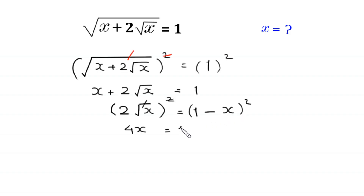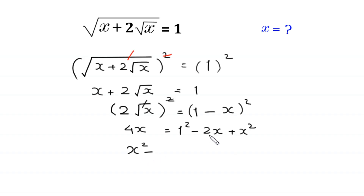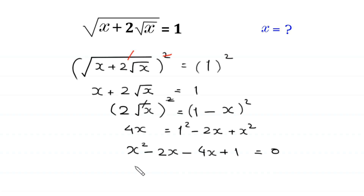Expanding (1 minus x)² gives 1 minus 2x plus x². We move 4x to the right side and rearrange: x² minus 2x minus 4x plus 1 equals 0, which simplifies to x² minus 6x plus 1 equals 0.